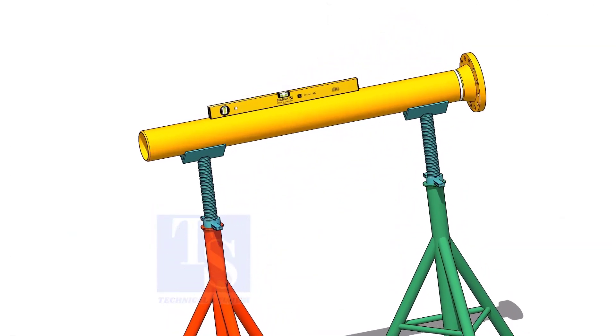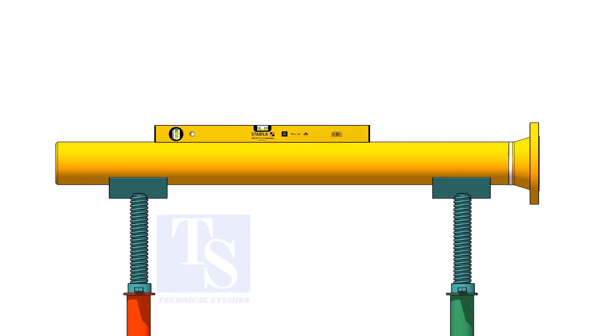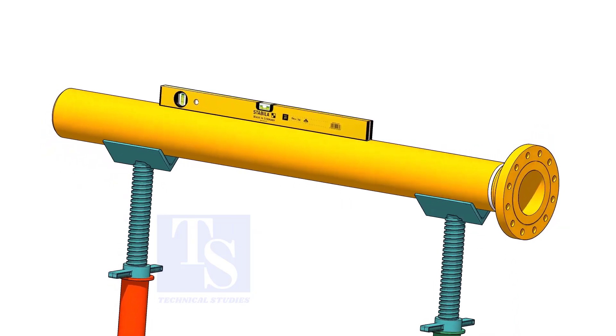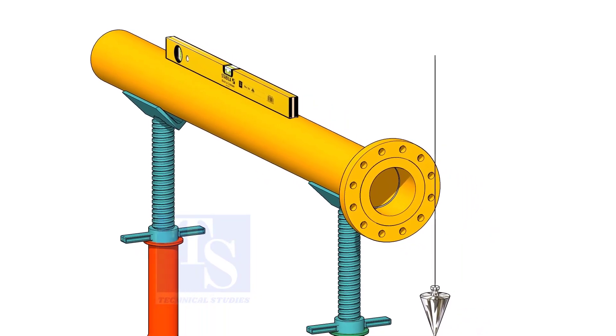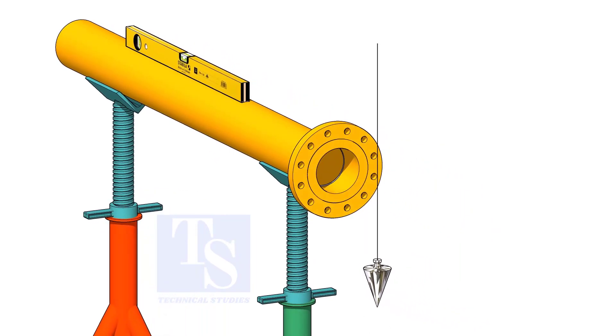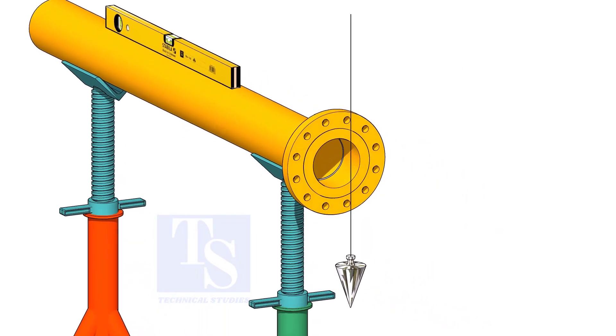Level the pipe and the flange. When you plumb the flange holes, choose the holes closer to the center of the flange.